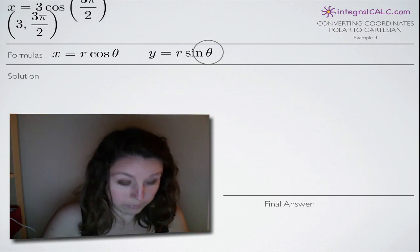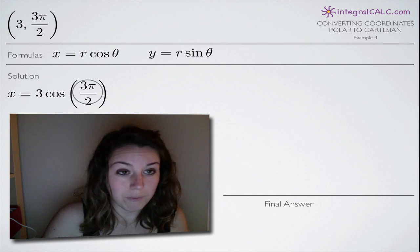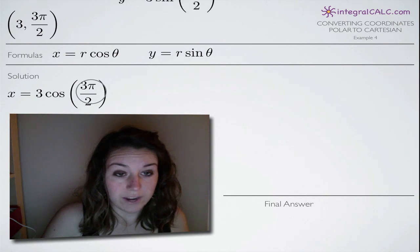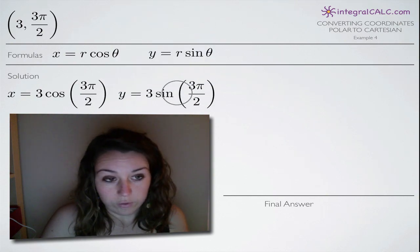So let's go ahead and plug those in. And we get the following two equations: x = 3 cosine of 3π/2 when we plugged in 3 for r and 3π/2 for theta, and y equals 3 sine of 3π/2.